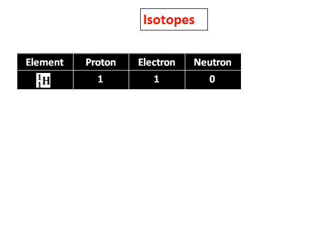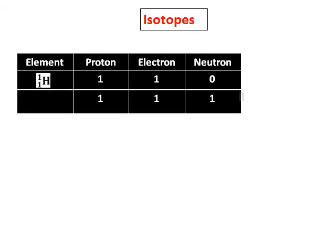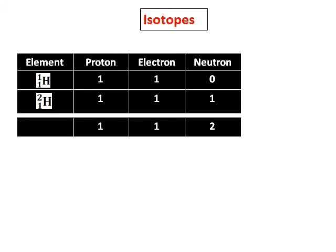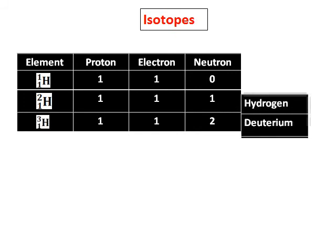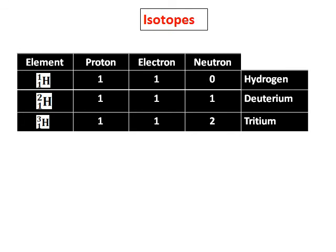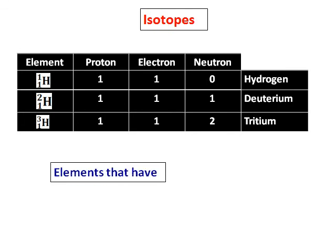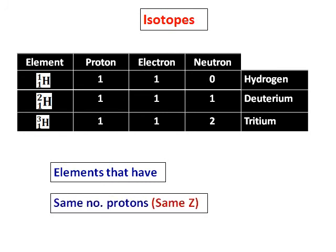Isotopes — we know that the element hydrogen has got one proton, one electron, and no neutron. But there are other hydrogens which have an extra neutron, while the number of protons remains the same. There are two more forms of hydrogen with one neutron and two neutrons, called hydrogen, deuterium, and tritium. Elements that have the same number of protons but different numbers of neutrons are called isotopes.